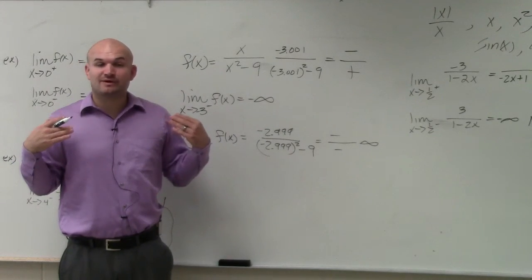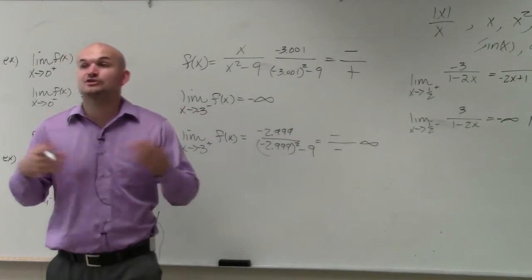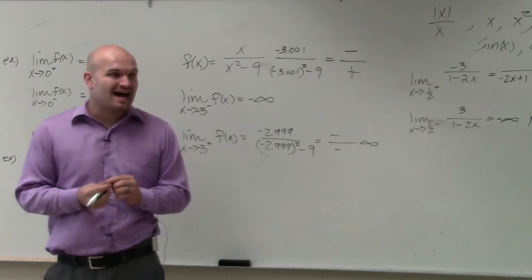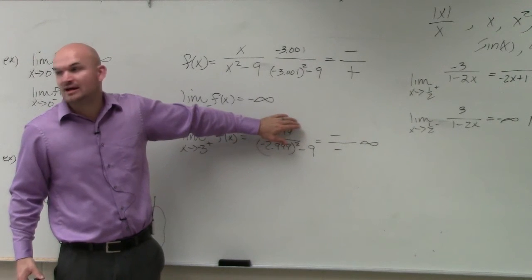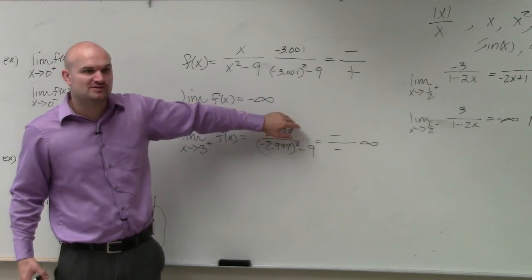So therefore, without even knowing what the graph looks like, without even knowing to graph it, or with the table, I can just pick values and use their signs to help me determine what the left and right hand behavior is going to be of those limits.